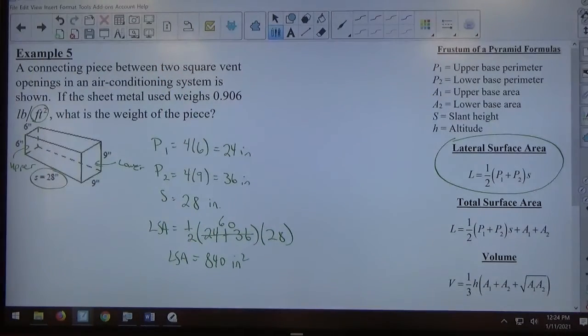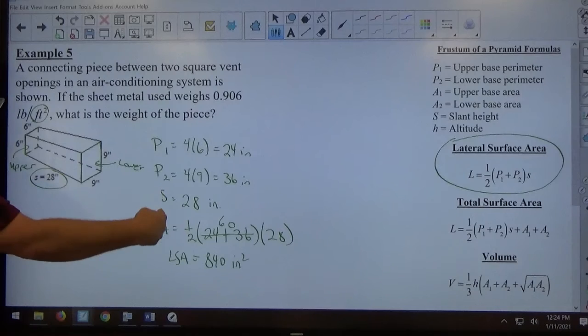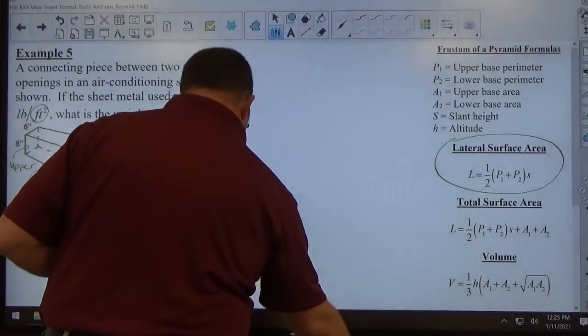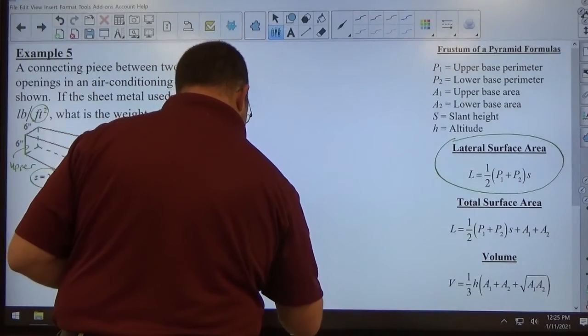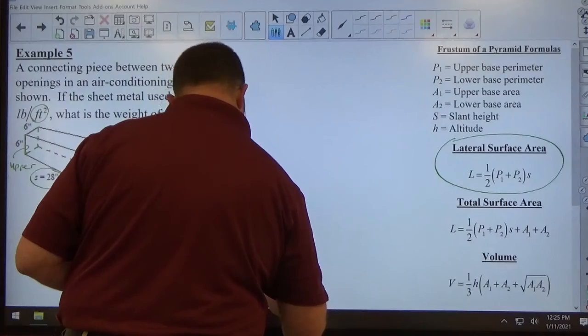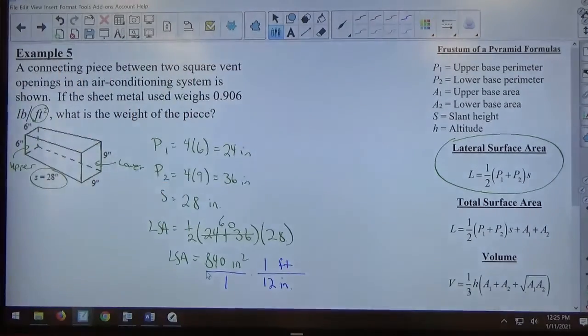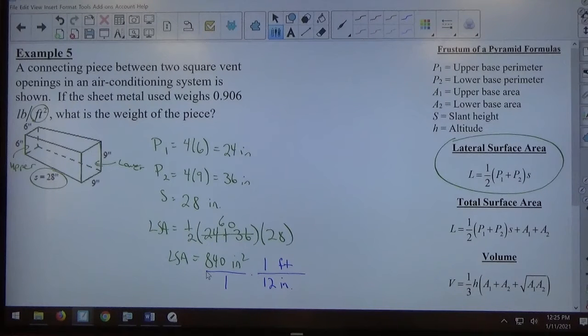Be cautious of units. As you can see in this picture, everything here is inches. So lateral surface area is going to be square inches. They're giving me a weight per square foot. I found an area in square inches. So now I need to convert to square feet, and I know that 1 foot is equal to 12 inches. 12 inches does not match 840 square inches.